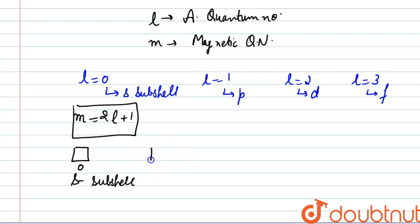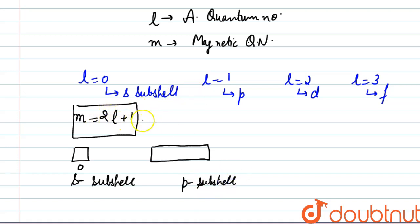For the P subshell, the number of orbitals is 2 into 1 plus 1, that is 3. It means 3 orbitals are present in P, and we write them as minus 1, 0, and plus 1.